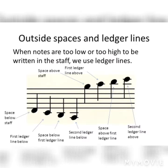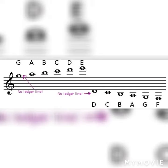Musicians use outside spaces and ledger lines when notes are too low or too high to be written in the staff. For example, the G above the staff is a space, and the G and D below the staff are also spaces. The note above the G above the staff is A, which creates a ledger line.